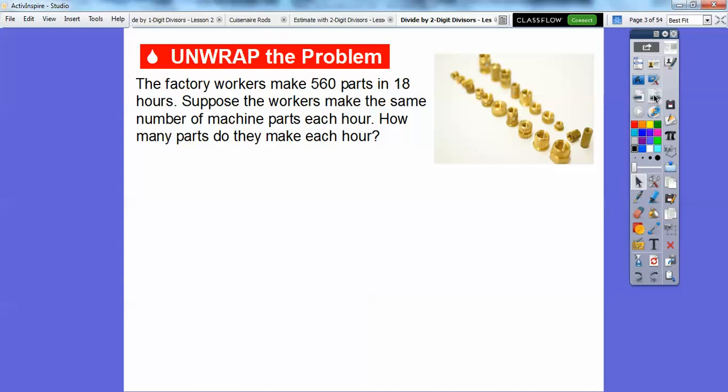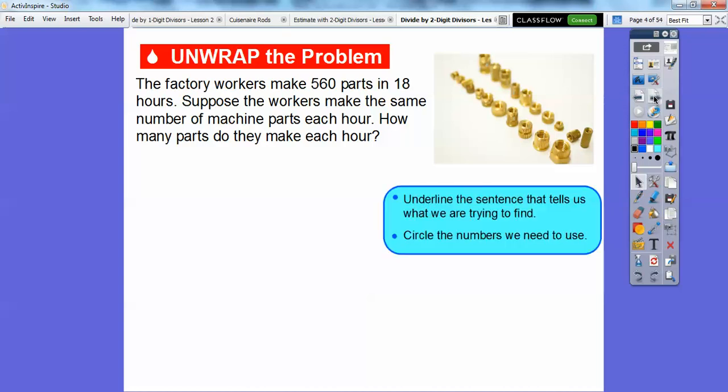The factory workers make 560 parts in 18 hours. Suppose the workers made the same number of machine parts each hour. How many parts do they make each hour? We're going to do some division here. Let's underline the sentence that tells us what we're trying to find and circle the two numbers we're going to use. We're going to divide 560 divided by 18 right here.